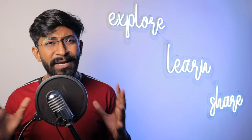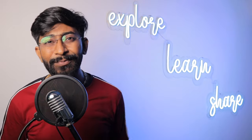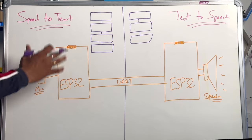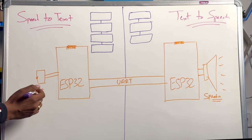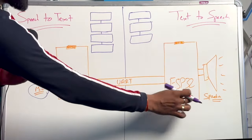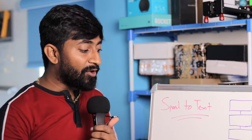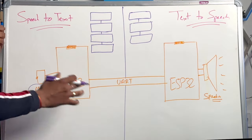Let me show you a proper explanation on the whiteboard about how both ESPs will communicate with each other. Here are both the ESPs: one for speech to text and the other for text to speech. The speech-to-text side has a microphone and an ESP32 as hardware, and the text-to-speech side has an ESP32 and a speaker as hardware. I'll show you what tasks are performed by each section.